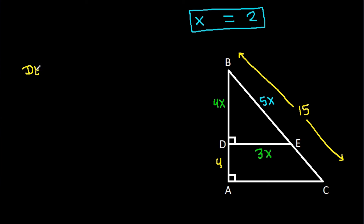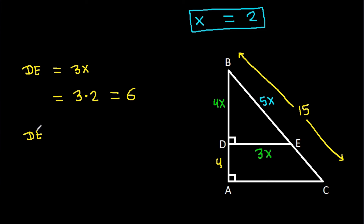DE is 3x, so it will be 3 times 2, that is 6. So DE is 6.